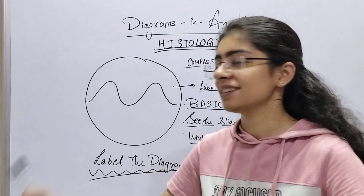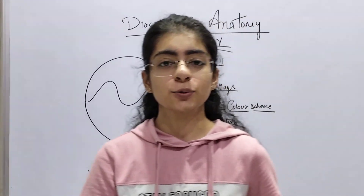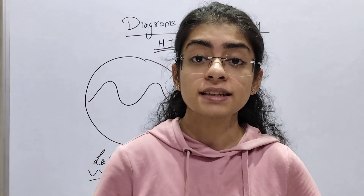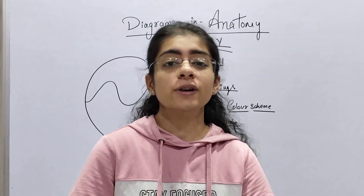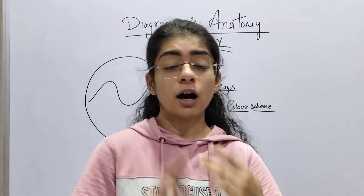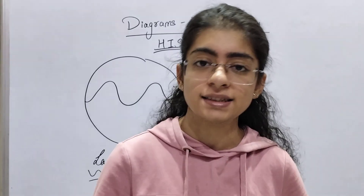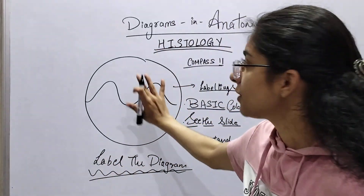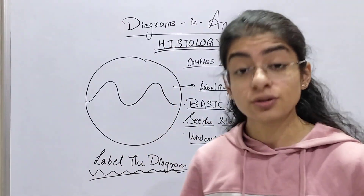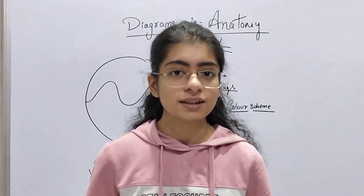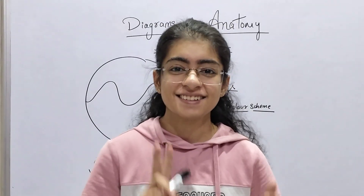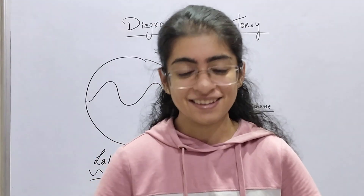Welcome to diagrams in anatomy part 2. Here we will discuss how to draw and present histology diagrams, and also how to learn and visualize them for better results. First of all, in histology diagrams you need to understand there are only two colors — H and E.